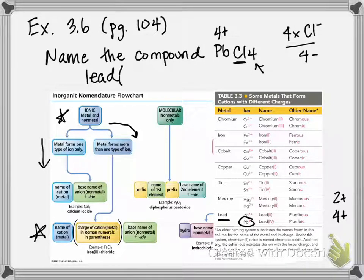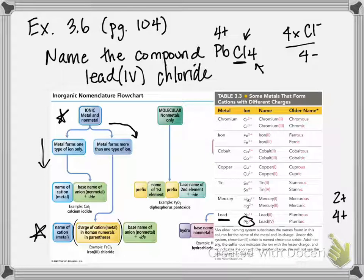So it's lead parentheses IV — meaning 4. When you're writing this, there's no space after lead; it's just lead(IV), close parentheses. Then we have a space and write the name of our anion. This is chlorine as an ion — we replace the -ine ending with -ide, so chlorine becomes chloride. Therefore, the name of this compound is lead(IV) chloride. That's how you name an ionic compound that contains a metal that can have more than one charge.